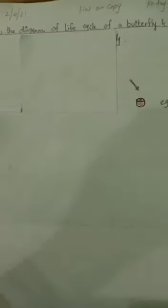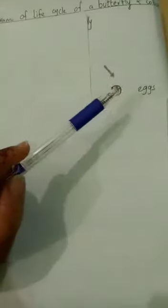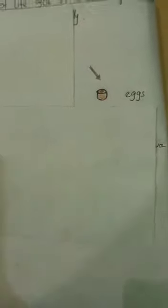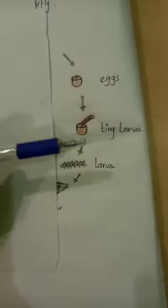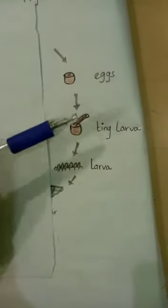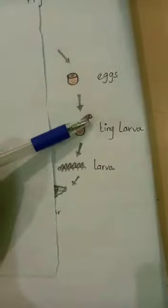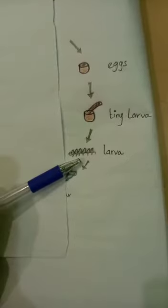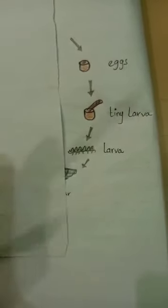Let's start, students. First of all, you have to mention the date. Then, you have to draw the first stage — a tiny larva. You have to draw it like this.